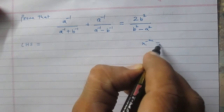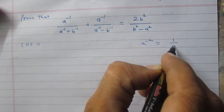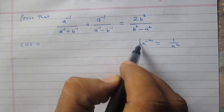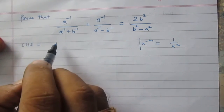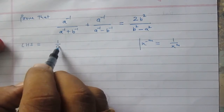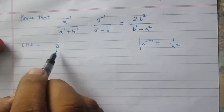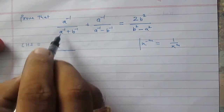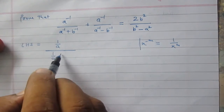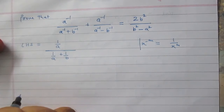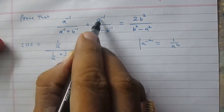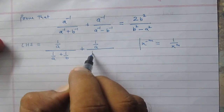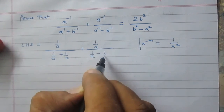We know that x raised to the power minus m can be written as 1 upon x raised to the power m. So using this rule, we can write the left hand side as: 1 upon a in the numerator of the first part, then the denominator of the first part is 1 upon a plus 1 upon b, plus 1 upon a and 1 upon a minus 1 upon b.